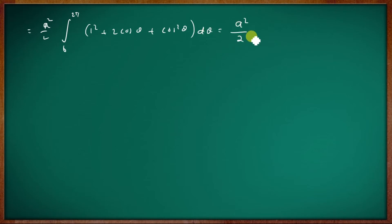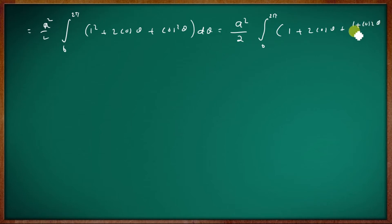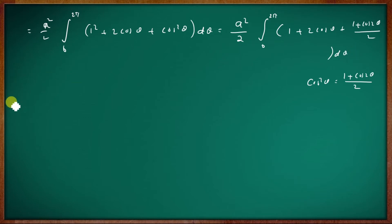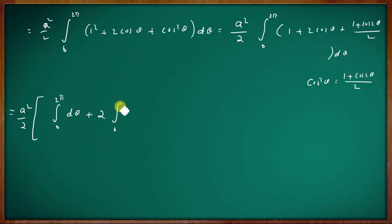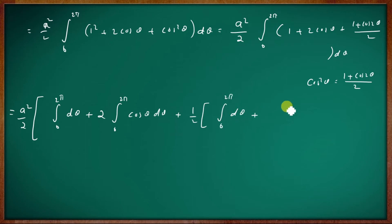This equals a²/2 times the integral from 0 to 2π of (1 + 2cosθ + cos²θ) dθ. Using the identity cos²θ = (1 + cos2θ)/2, we split into: integral of dθ, plus 2·integral of cosθ dθ, plus (1/2)·integral of (1 + cos2θ) dθ, all from 0 to 2π.